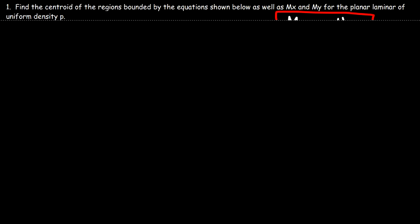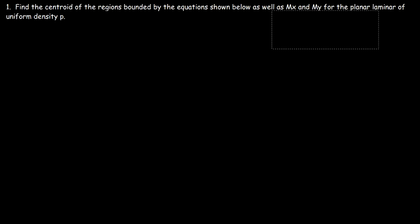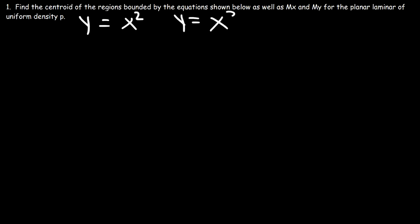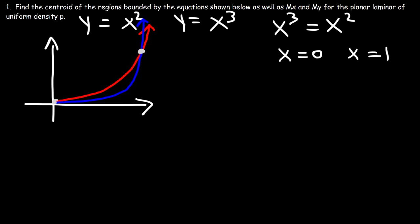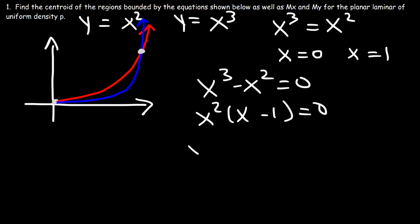Now let's work on another example problem. We'll find the centroid bounded by the equations y equals x squared and y equals x cubed. First, we need to find the points of intersection. Setting x cubed equal to x squared — factoring gives x squared times (x minus 1) equals 0 — so x equals 0 and x equals 1 are the intersection points.